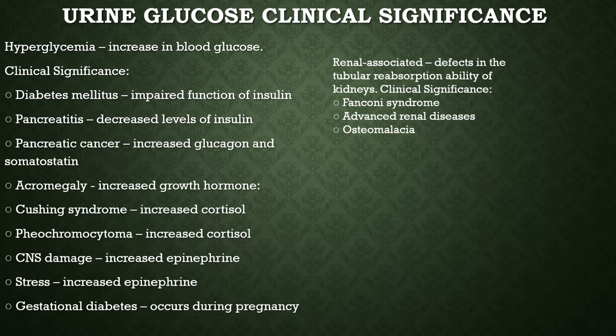Reaction interferences for ketones: false positive results seen in contamination with phthalein compounds, highly pigmented urine, and presence of levodopa and other medications containing sulfhydryl groups. False negative results seen in prolonged standing of urine. Another test for ketones is the Acetest tablet test: a tablet containing sodium nitroprusside, glycine, disodium phosphate, and lactose reacts with urinary ketones to give a purple color within 30 seconds. Color is graded as negative, small, moderate, and large.